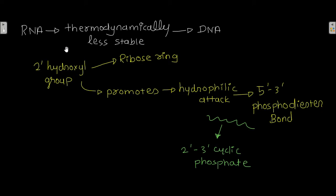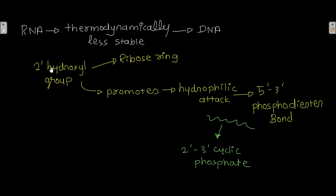The second factor is that RNA is thermodynamically less stable than DNA. There is a 2' hydroxyl group on the ribose ring of RNA that promotes a nucleophilic attack on the 5'-3' phosphodiester bond. When this attack occurs on the 5'-3' phosphodiester bond of RNA, it results in the formation of a 2'-3' cyclic phosphate.